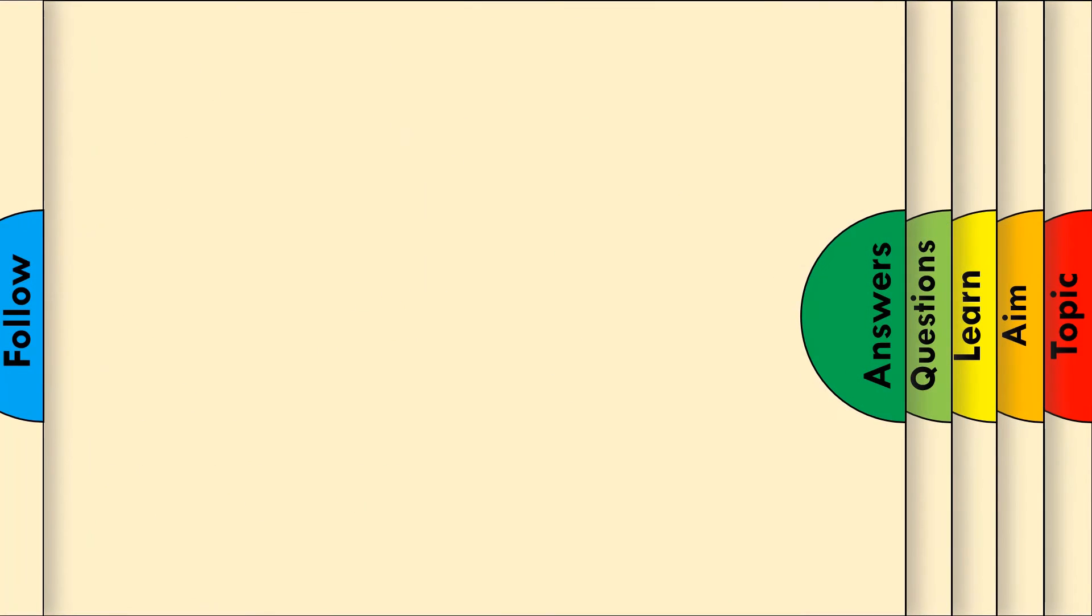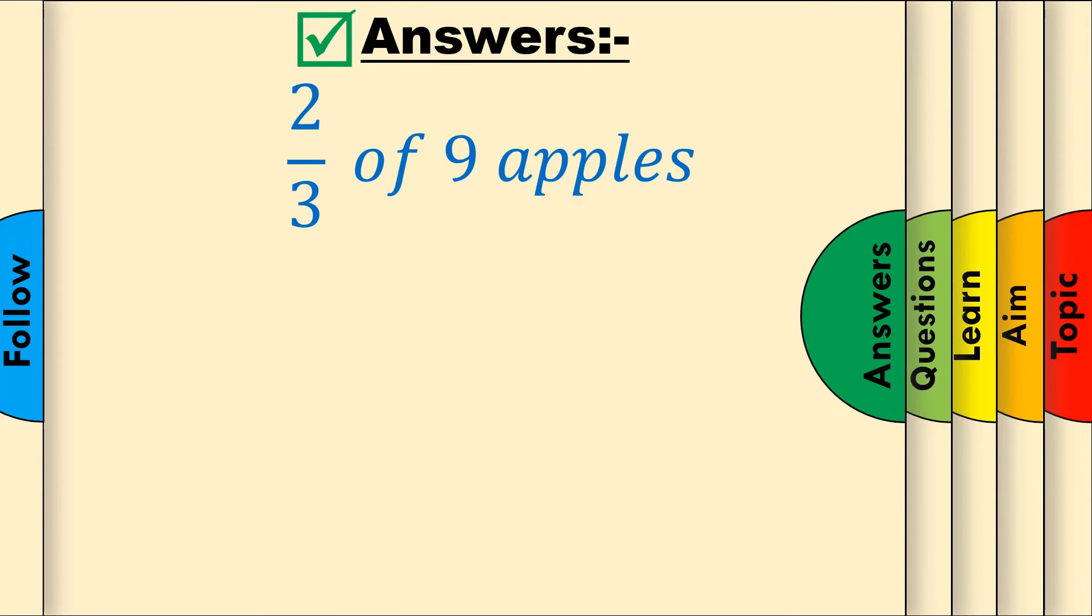Answers. Question 1. 2 over 3 of 9 apples. The amount, 9, divided by the denominator of 3 is 3. Multiply this by the numerator of 2 to get 6 apples as the final answer.